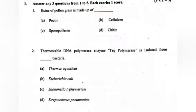Question 1. Exine of pollen grain is made up of: A. Pectin, B. Cellulose, C. Sporopollen, D. Chitin. Answer: C. Sporopollen.